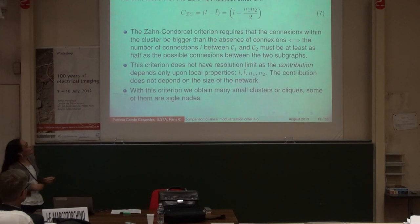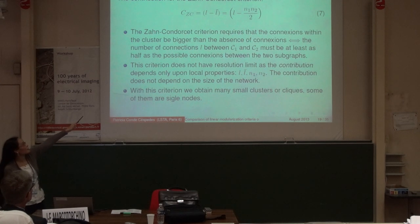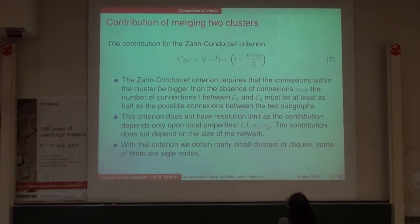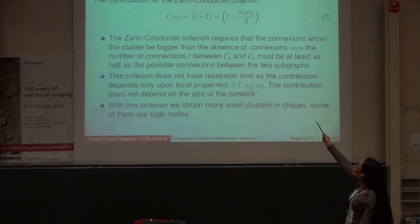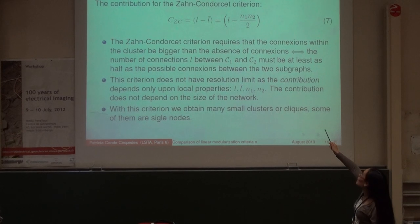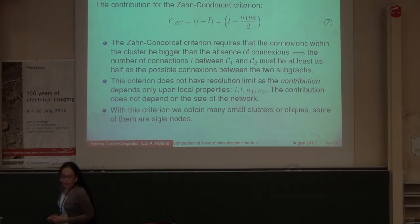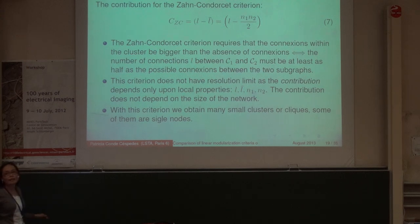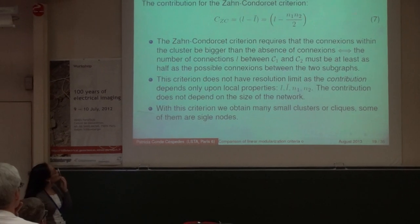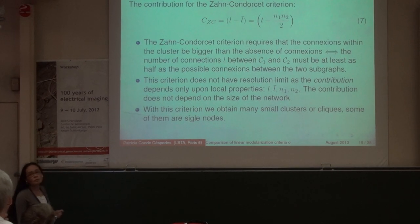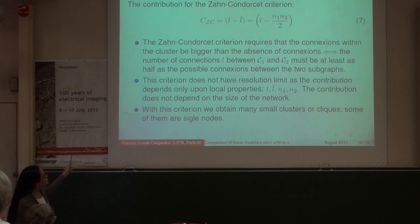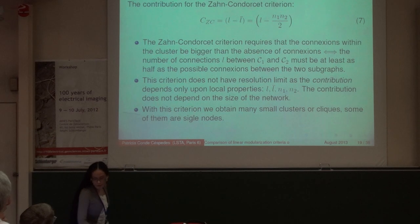Analyzing criterion by criterion: for the Condorcet criterion, looking at the contribution expression, for the fusion to take place, L — the number of between-cluster edges — must be at least half the maximum possible between-cluster edges that can exist between the two subgraphs. Why half? Because the Condorcet criterion is rooted in voting theory, so it requires an absolute majority of 50%. We can also see from the contribution that this criterion does not have a resolution limit, because the contribution depends only on local properties, not global properties. An inconvenience is that we obtain many small clusters or cliques, and even single nodes.